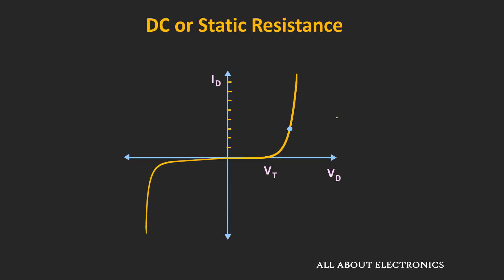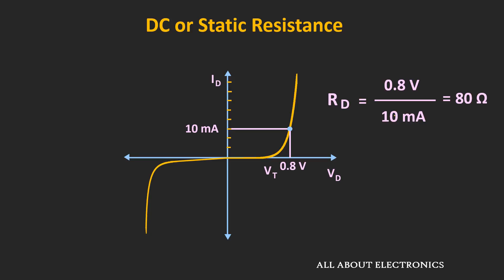The DC or static resistance of the diode is the resistance offered when the applied voltage is a DC voltage. Its value can be found by knowing the operating voltage and current. For example, if a diode is operated at 10 mA and 0.8V, the DC or static resistance is 0.8V divided by 10 mA, which equals 80 Ohm. Once the operating voltage and current are fixed, the value of this DC resistance remains constant — that is why it is called static resistance.